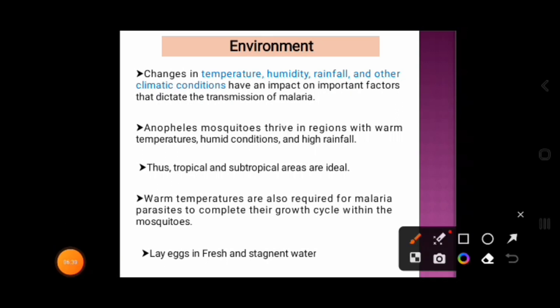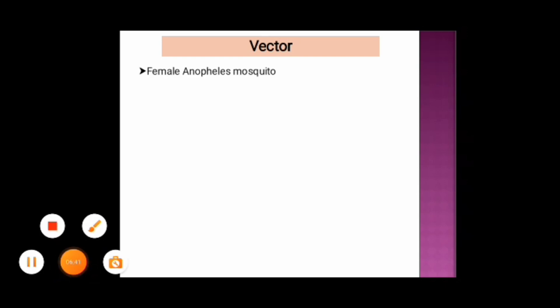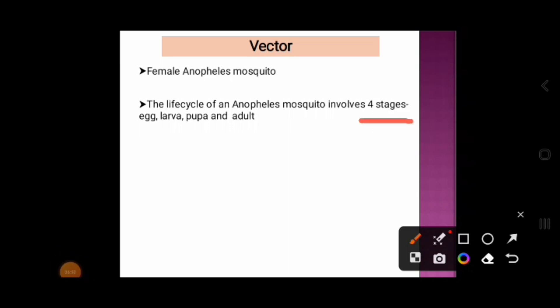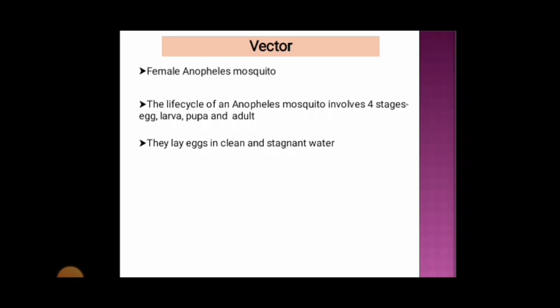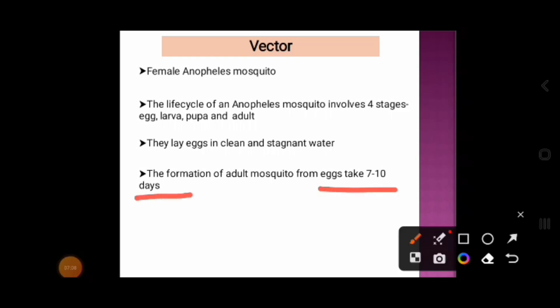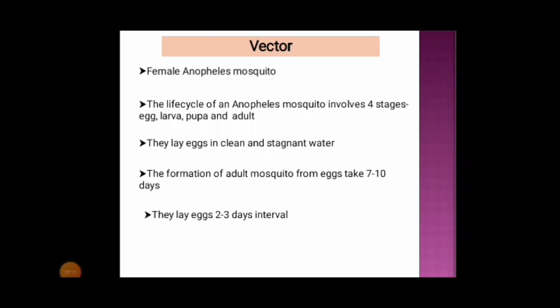The mosquitoes lay eggs in fresh and stagnant water. The vector is the female Anopheles mosquito. The life cycle of an Anopheles mosquito involves four stages: egg, larva, pupa, and adult. The formation of an adult mosquito from egg takes seven to ten days, and they lay eggs at two to three day intervals.